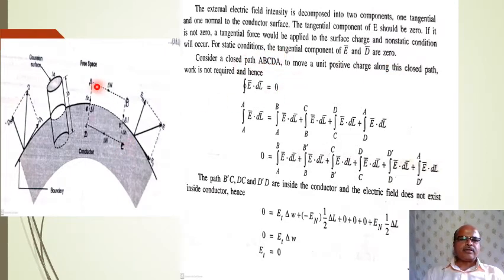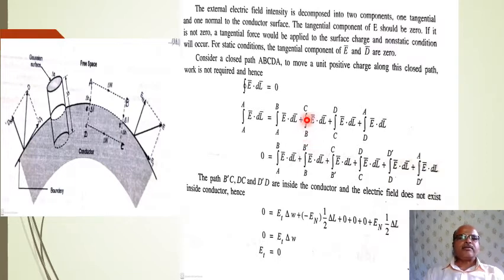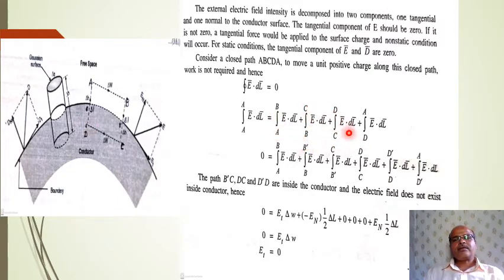Consider the closed path ABCDA. To move a unit positive charge along this closed path, no work is required. Hence the closed integral of E·dL is equal to zero. This gives us: integral from A to B + integral from B to C + integral from C to D + integral from D to A of E·dL = 0.